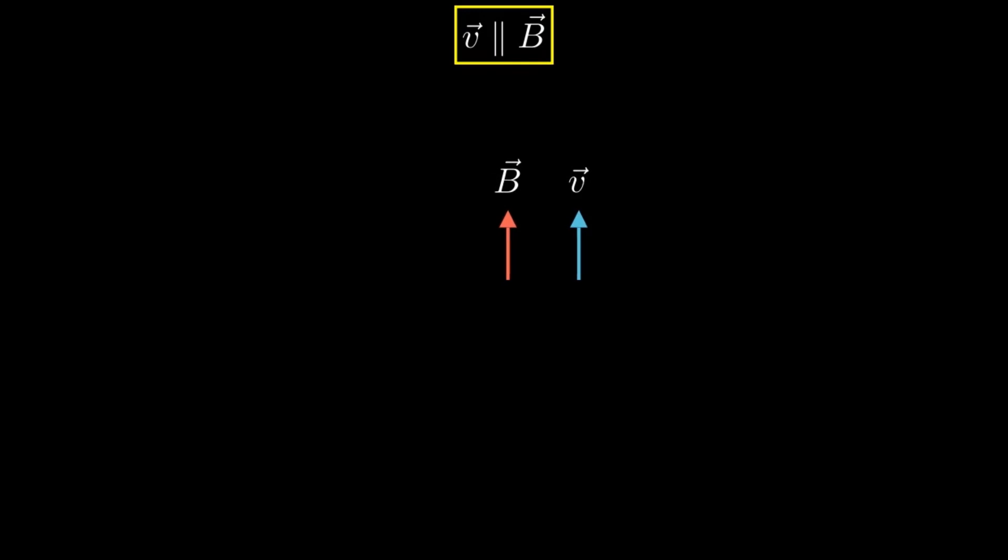The case we just looked at was when velocity was perpendicular to the magnetic field. There is a simpler case. When velocity is parallel to the magnetic field, we have the cross product of V cross B equal to zero. Therefore, there is no acceleration, and the electron moves along as it did before.